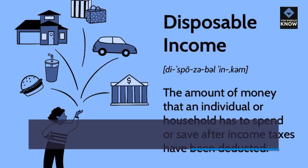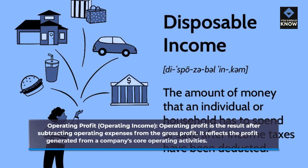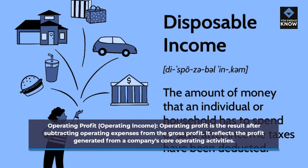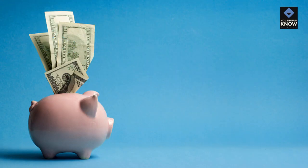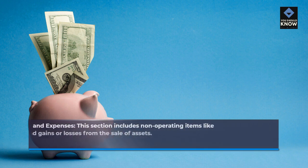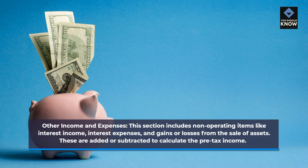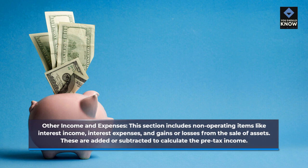Operating profit, or operating income, is the result after subtracting operating expenses from the gross profit. It reflects the profit generated from a company's core operating activities. Other income and expenses includes non-operating items like interest income, interest expenses, and gains or losses from the sale of assets. These are added or subtracted to calculate the pre-tax income.